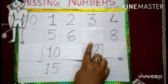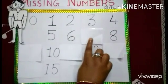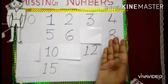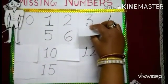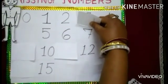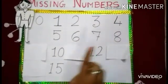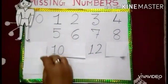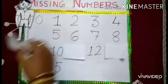Again missing — what number comes after six and before eight? Can you tell me? Number seven. Very good. After eight, again missing. Tell me, children. Number nine.